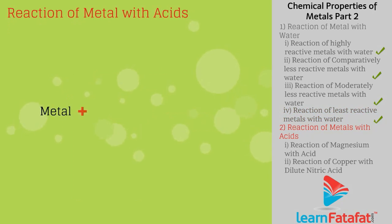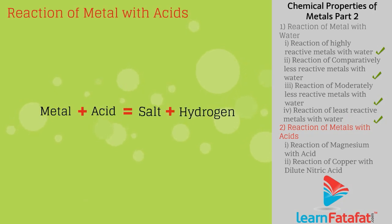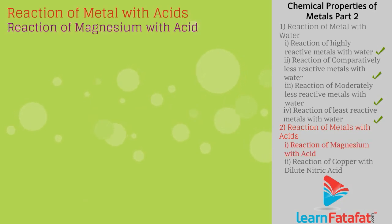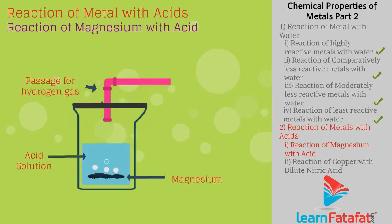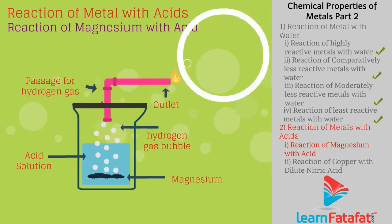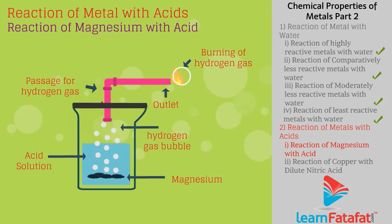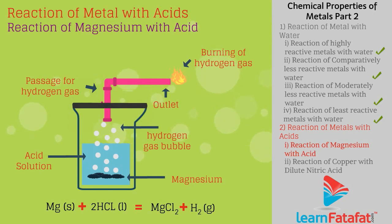Reaction of metals with acids. Generally, metals react with acid to form salt and release hydrogen gas. Most metals like magnesium react with acid to form salt and release hydrogen gas, which is tested by burning. For example: Mg + 2HCl gives MgCl2 + H2.